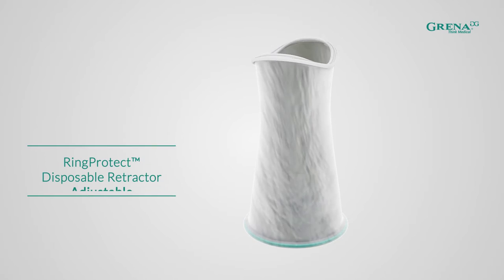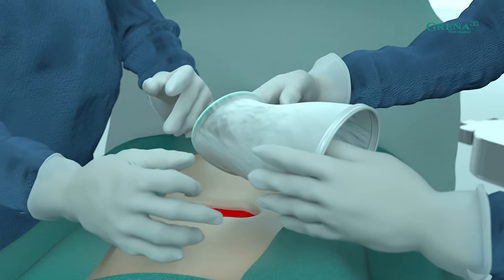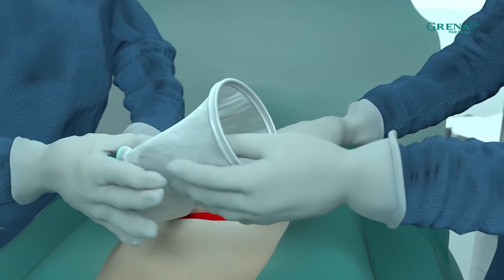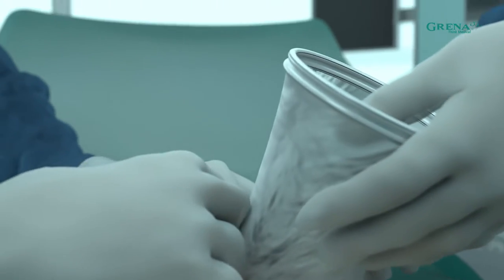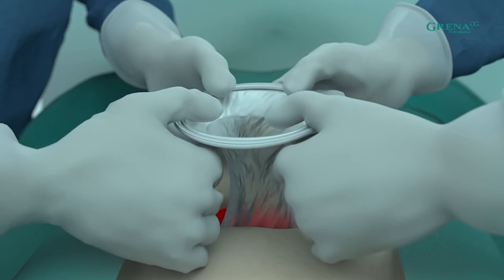Grena Ring Protect Retractor is effective and easy to use. First, prepare the surgery area according to standard procedures. Then, open the packaging and place the retractor on a sterile surface. Make an incision and insert the green ring of the retractor inside the wound.